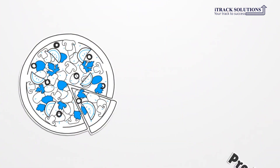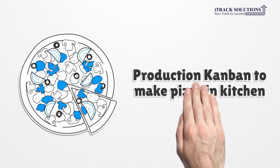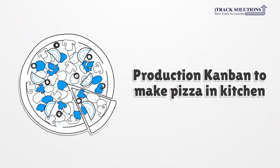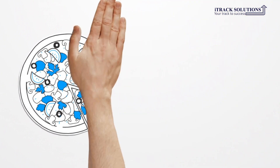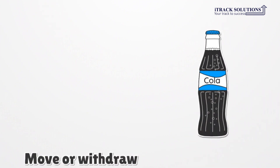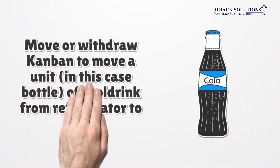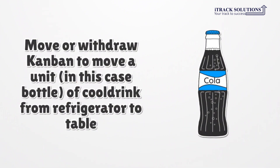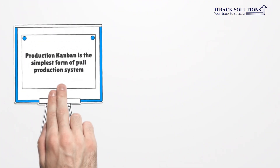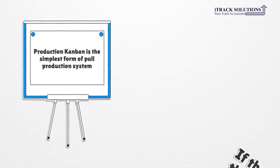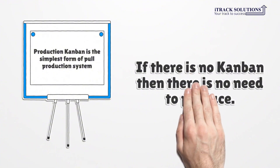Production Kanban will be handed over to the kitchen and that will initiate the process of making pizza. Move or withdraw Kanban will be given to the bar to move a unit — in this case, a bottle of cool drink from the refrigerator to the table. Hope the example was easy to understand.